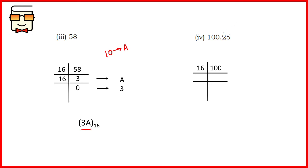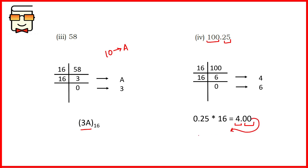The last part of question 6 has both an integer and a fractional part. For the integer part, divide 100 by 16: 16 times 6 is 96, remainder 4; then remainder 6. For the fractional part, multiply by 16 and collect the integer portion repeatedly until the fractional part becomes 0. Multiplying the fractional part by 16 gives integer 4 and fractional part 0, so we stop. The final answer is 64.4 in hexadecimal, with the remainders collected in reverse order.